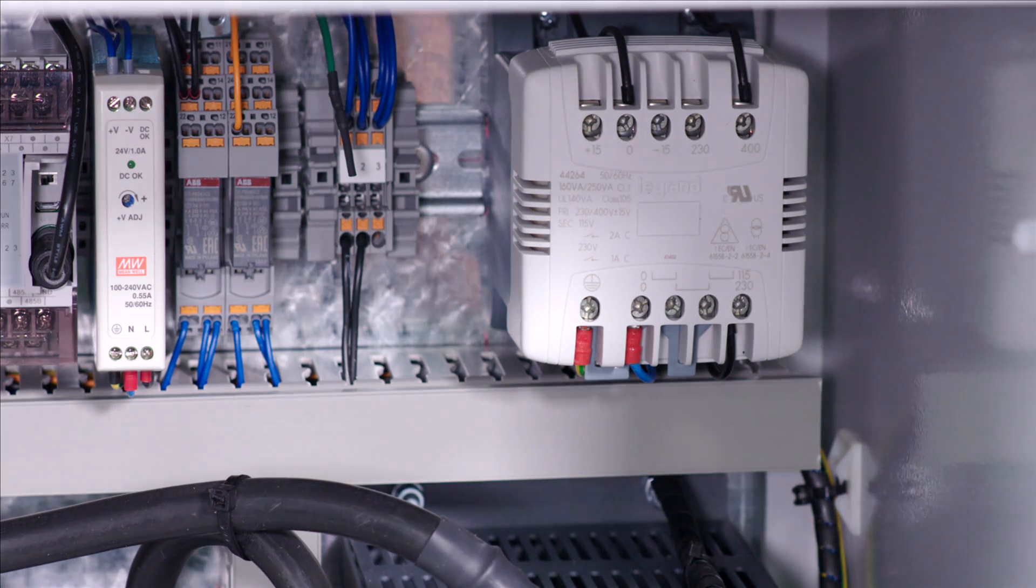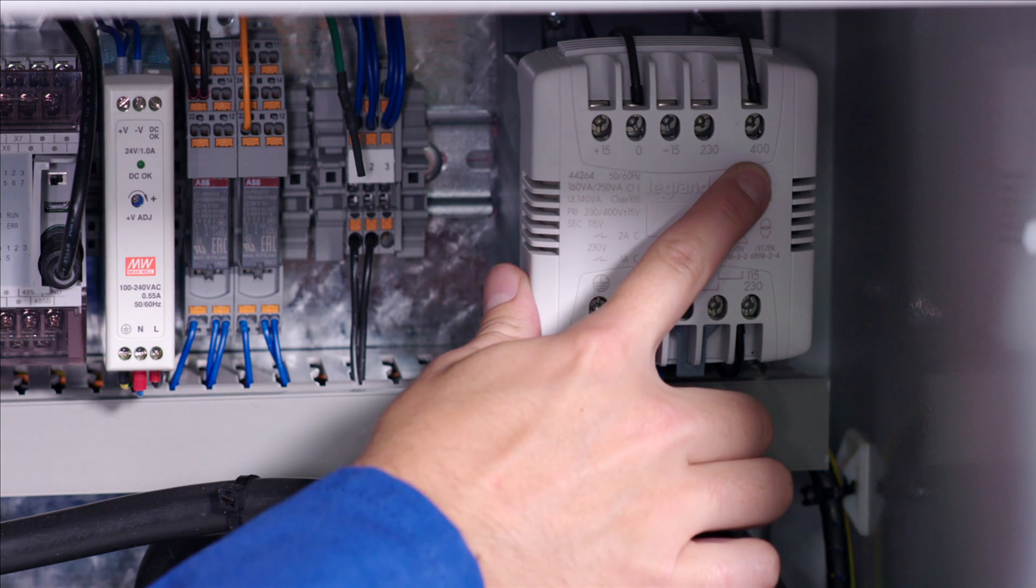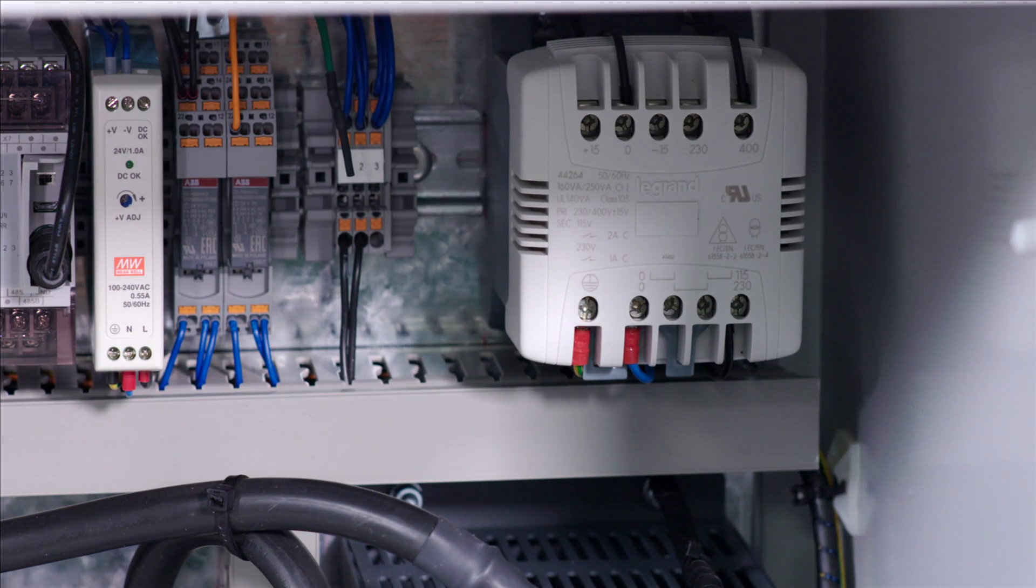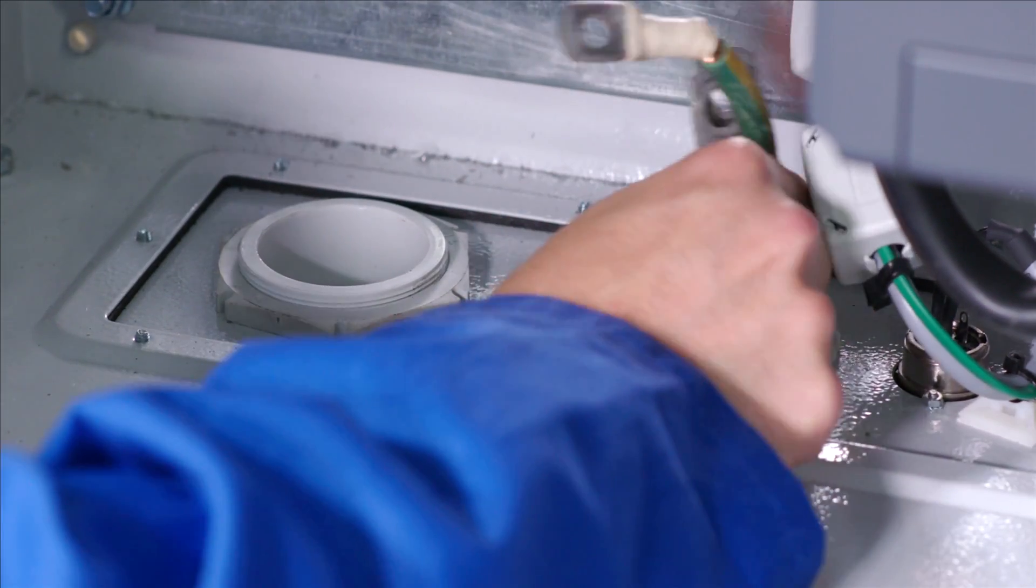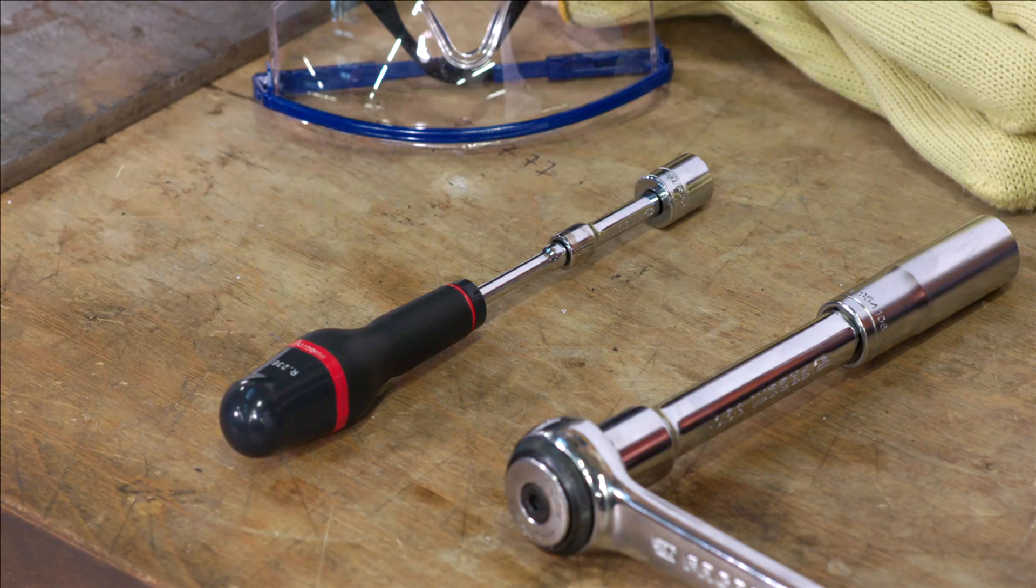In this example, the transformer is set to 400V input. You can correct the exact level by connecting the other pins for plus or minus 15V. Using a qualified electrician, connect the EAZ coil to the cabinet.